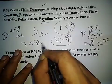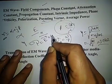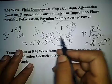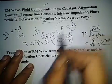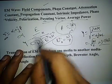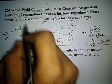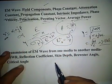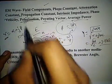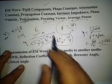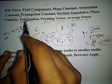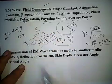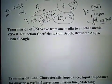The Poynting vector P equals E cross H (cross product of electric and magnetic field) is important, and average power can be determined using it. Polarization is another very important topic for the GATE exam — detailed videos on polarization are available separately.